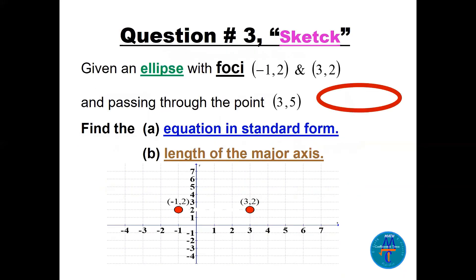A quick sketch helps. Plot the foci: (−1, 2) and (3, 2). Since the foci lie on the same horizontal line (y = 2), the major axis must be horizontal. The foci lie on the major axis, so there is no way the ellipse could have a vertical major axis. From this simple sketch you can immediately identify the type.